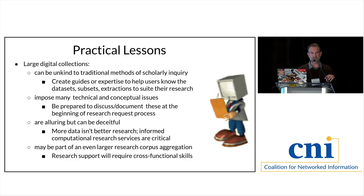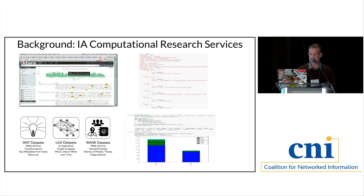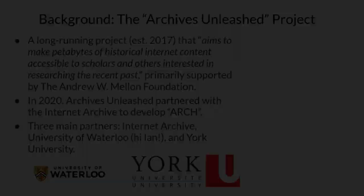Trying to help researchers navigate from what's available to what will be useful to what they'll actually be capable of working with has been important. Often they're aggregating data we give them with data from other places — journal content from university subscription agreements, Wikimedia, or open commons digital collections. Working with them to understand how our data might complement a larger corpus they're building for their research project has been important. We've tried notebooks, APIs, interactive Kibana-style dashboard things, and prepackaged datasets — all that typology, to varying degrees of success.